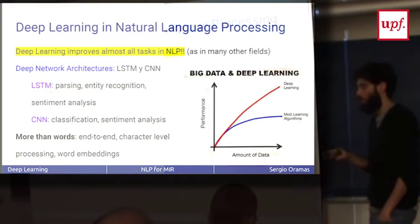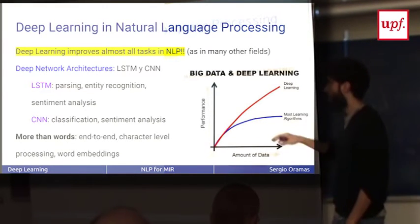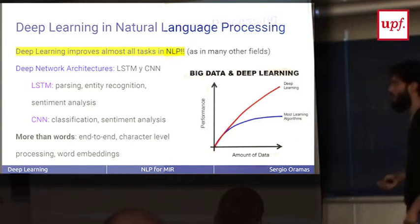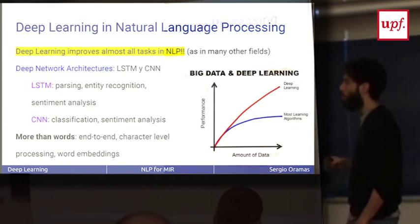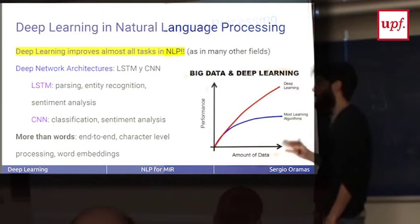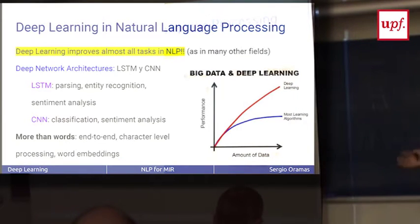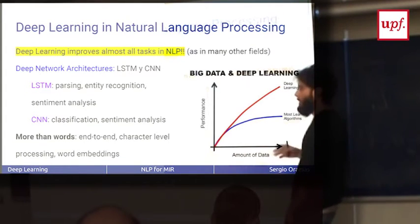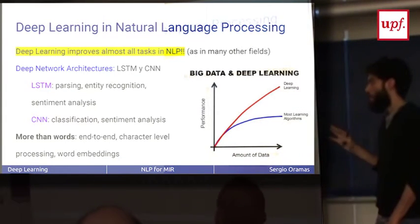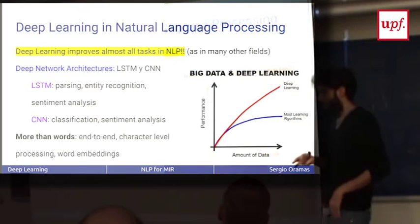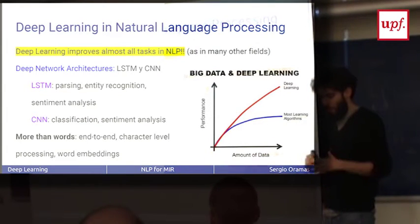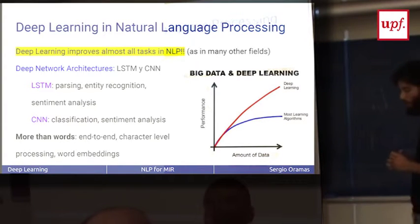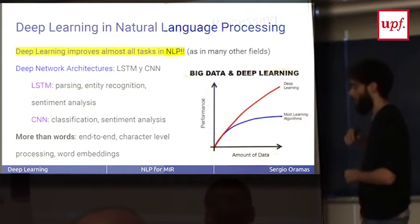I'm not going to explain how to do NLP with deep learning, but the typical architectures used in NLP are LSTM and convolutional neural networks. LSTMs are used in parsing, entity recognition, sentiment analysis, and CNNs for classification and sentiment analysis also.